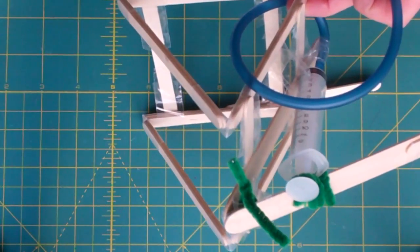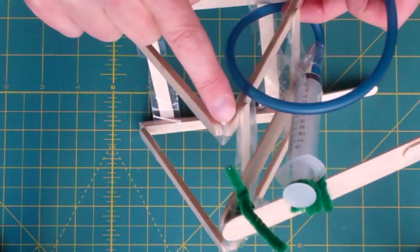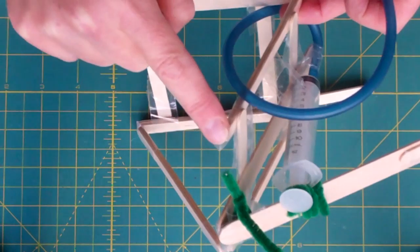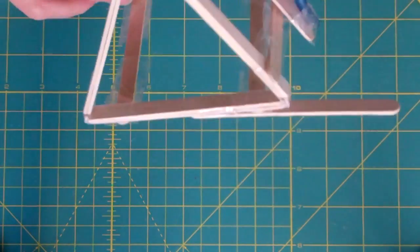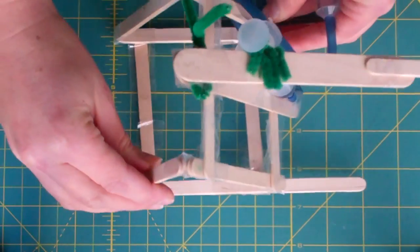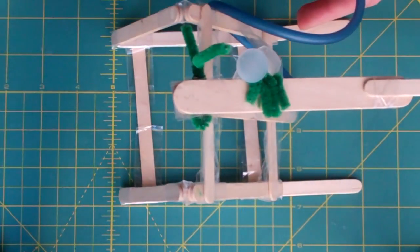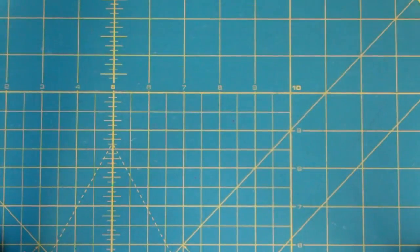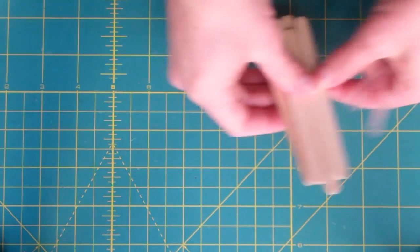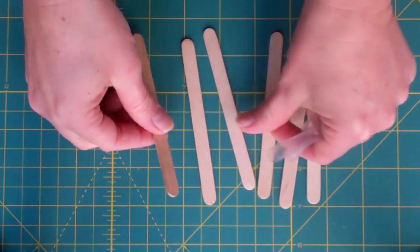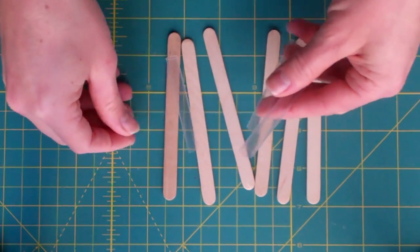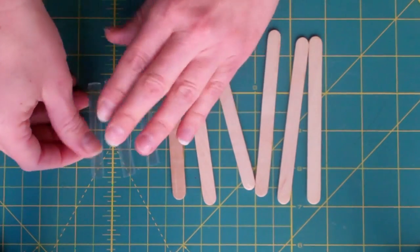Okay, step one of making our pneumatic machine is to build the two stand pieces, these strong triangles on each side that form the strong base for it to stand on. So to do this, for each one you'll need six of the smaller lollipop sticks and three pieces of straw, the longer pieces of straw.